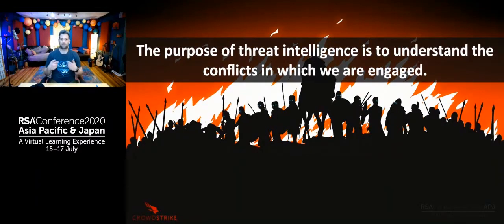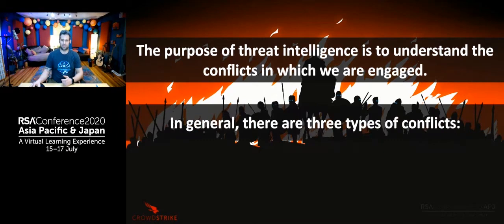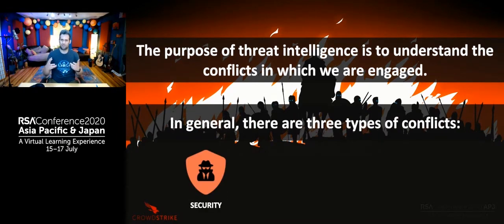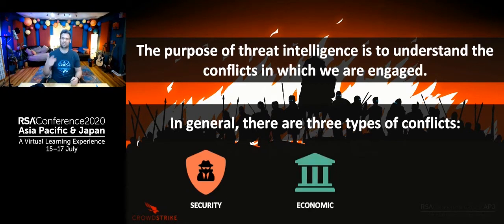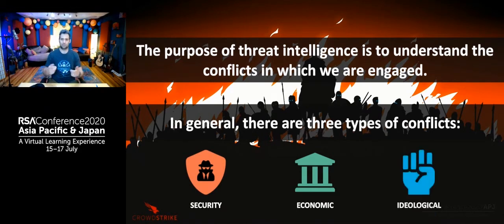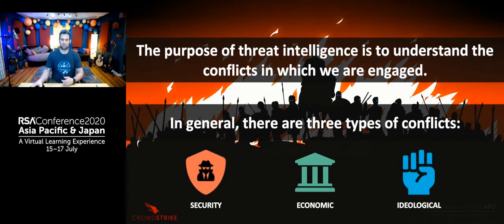When it comes down to it, the purpose of threat intelligence is to understand the conflicts in which you are engaged. In general, you'll find that you are engaged in three types of conflicts. There is security conflicts, which is more about safety and national resources — worrying about other countries invading you or stealing your secrets. There is economic conflicts, which are mainly financially motivated — think criminals trying to steal your money or economic espionage. And the last type is ideological conflict, such as hacktivists coming after you for religious reasons or reasons over world events.